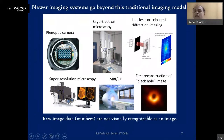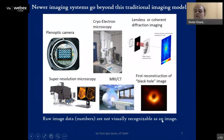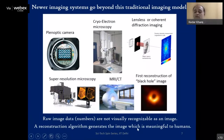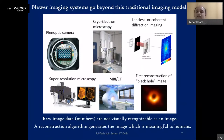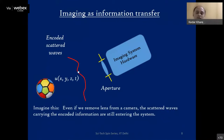Three years ago you may have seen the image of a black hole at the center of M87 galaxy, made by creating an Earth-sized telescope by placing antennas at different corners of the Earth. These systems produce no raw image — just raw numbers not visually recognizable. Reconstruction algorithms that understand the physics of how data is collected then invert the coding mathematically to form an image meaningful to humans. These are the most exciting computational imaging systems today.